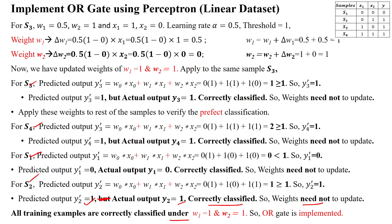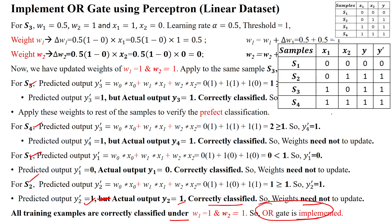Since all samples are perfectly classified, we can stop the algorithm. The OR gate data is perfectly implemented using the perceptron learning rule. All data samples are correctly classified by using the perceptron learning rule. Thanks for watching.